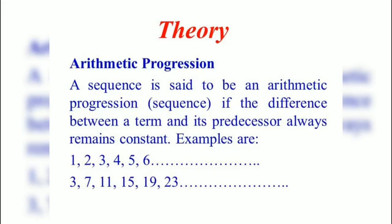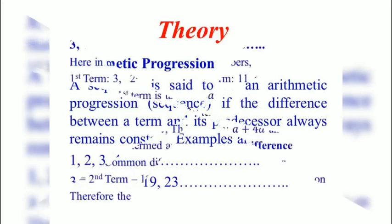Another one: 3, 7, 11, 15, 19, 23. So this is also an example of arithmetic progression.